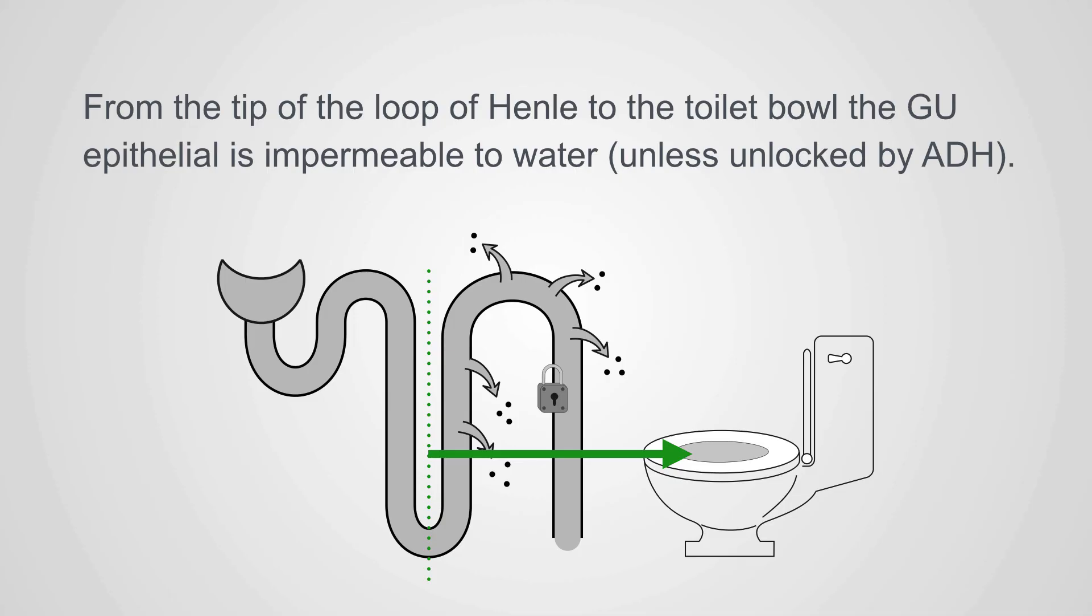This means that the GU tract is able to build up concentration gradients, is able to excrete fluid that is either more dilute than plasma or more concentrated as plasma, and that allows it to regulate the osmolality of the body.